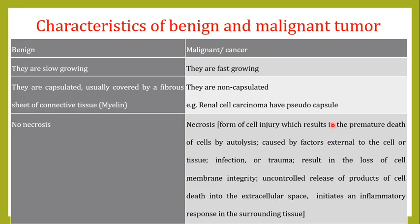In this video I want to focus on the characteristics of benign and malignant tumors so you can see the differences between them. One important difference is that benign tumors are slow growing while malignant tumors are fast growing. The reasons for this will be clear in a moment.